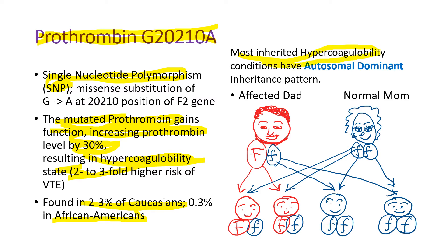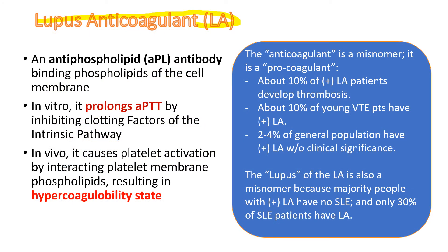Most inherited hypercoagulability conditions have an autosomal dominant inheritance pattern. So if one of the parents carries the gene, half of the children will be affected. Lupus anticoagulant is actually not an anticoagulant—it is a pro-coagulant, increasing the risk of thromboembolism. So it is a misnomer. It is an acquired hypercoagulability condition.